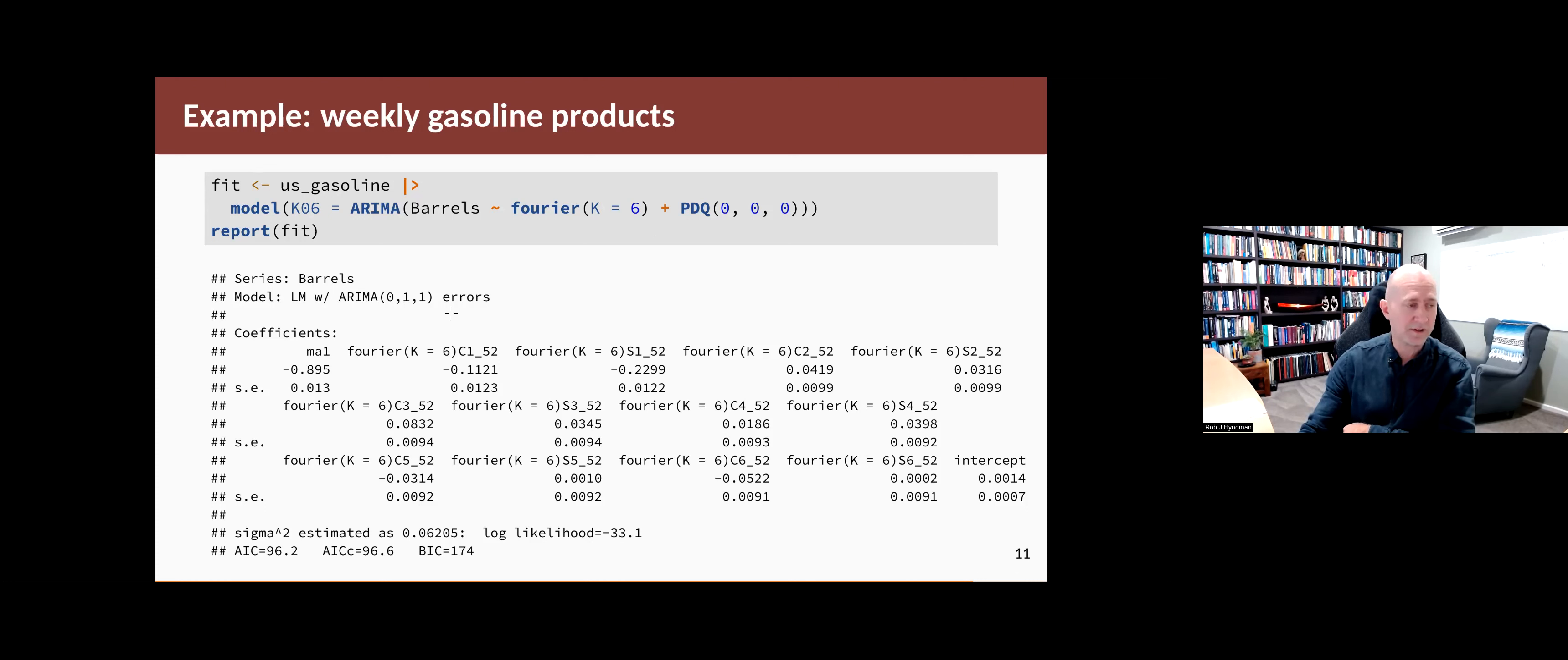And again, the error term is a 0, 1, 1. That's just coincidentally. It's chosen the ARIMA part of the model automatically, as usual. And notice also that the model includes an intercept. And because there is differencing here that little d is 1, that means that that's going to have a drift term in it. So there will be some trend in the forecasts.